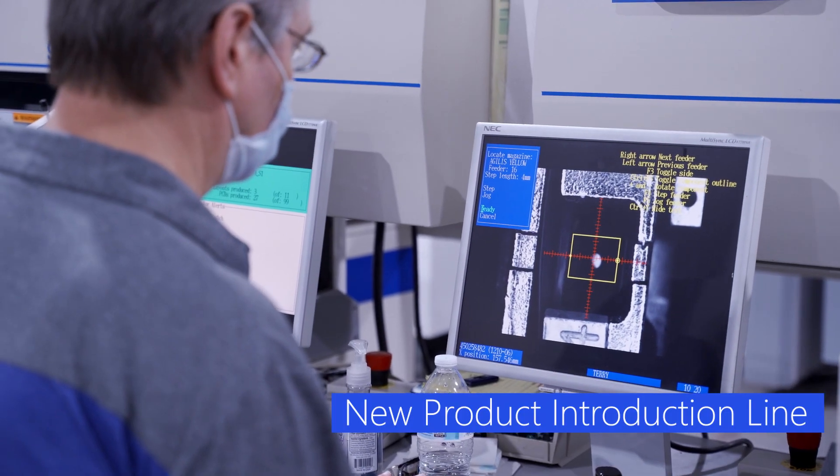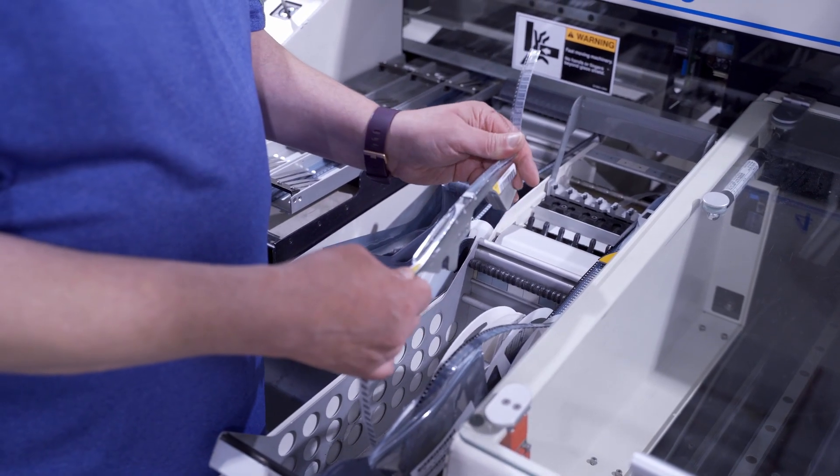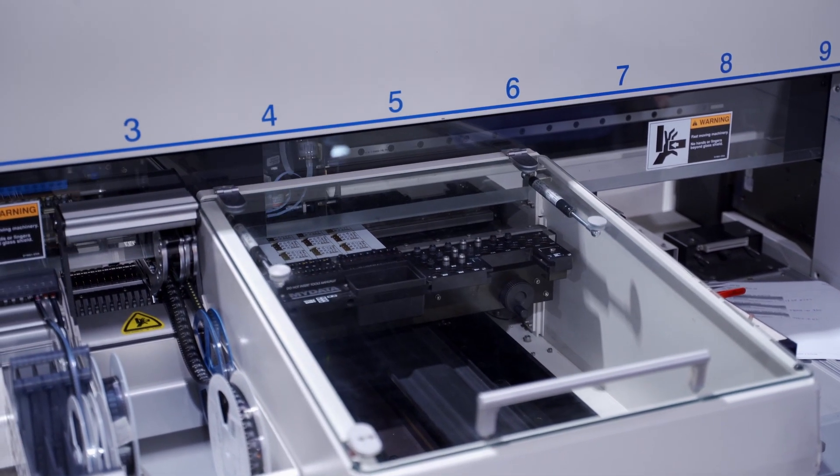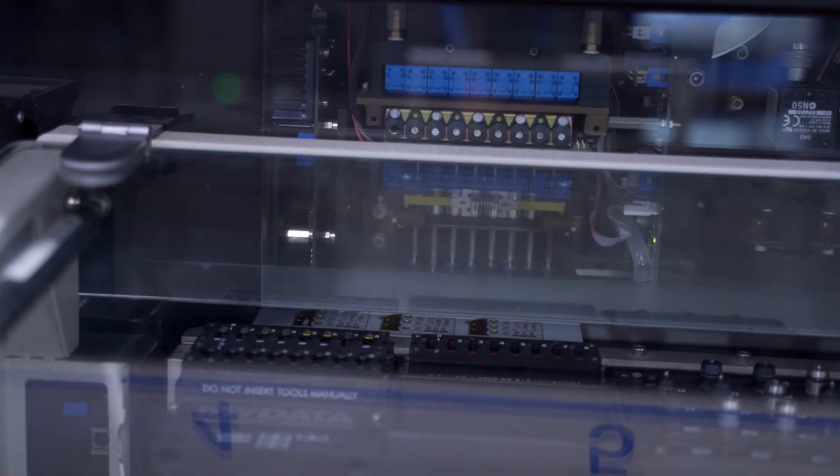The manufacturing engineers can take the time to optimize the process without worrying about impacting production schedules. The NPI line can be used for any prototypes that can't be hand soldered and for pre-production runs of 10 to 100 boards or so.